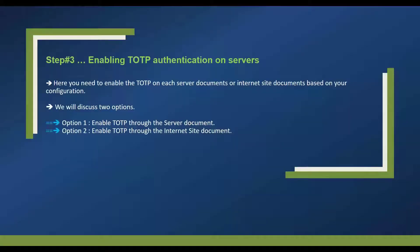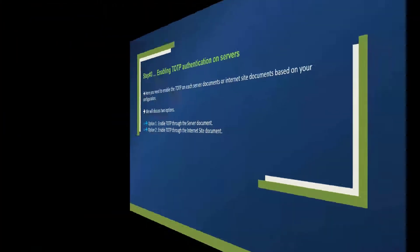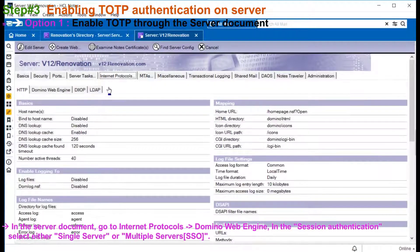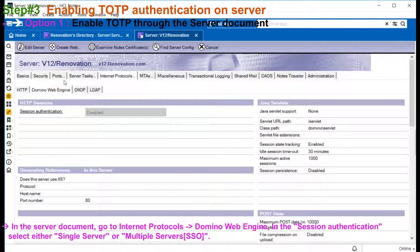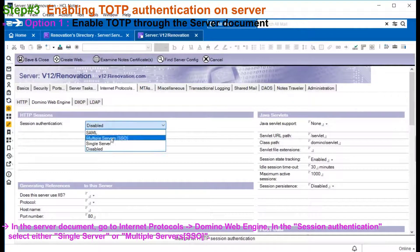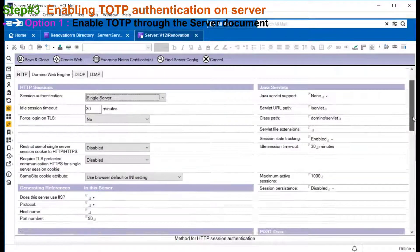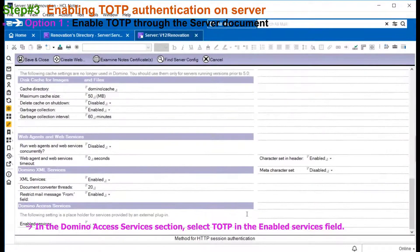Step 3 is to enable TOTP on servers. Depending on the configuration, you can enable this either on the server document or the internet site document. First, we will check how this can be enabled through the server document. Go to the internet protocol, Domino web engine, and select either single server or multi server.